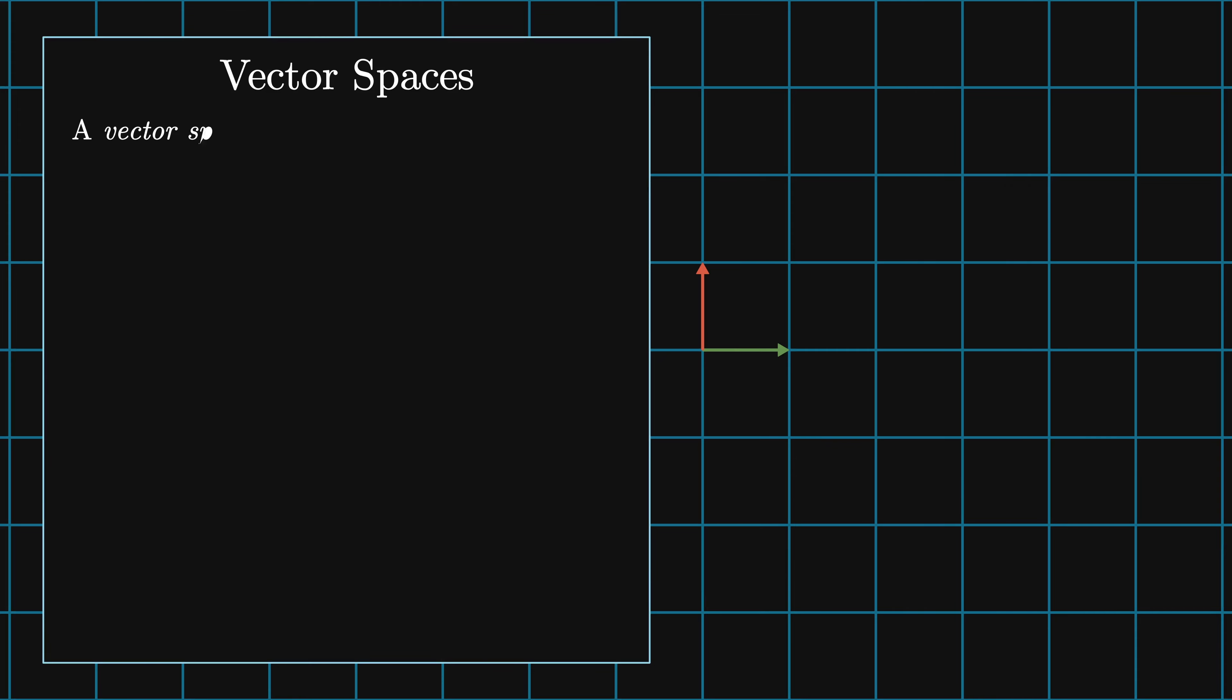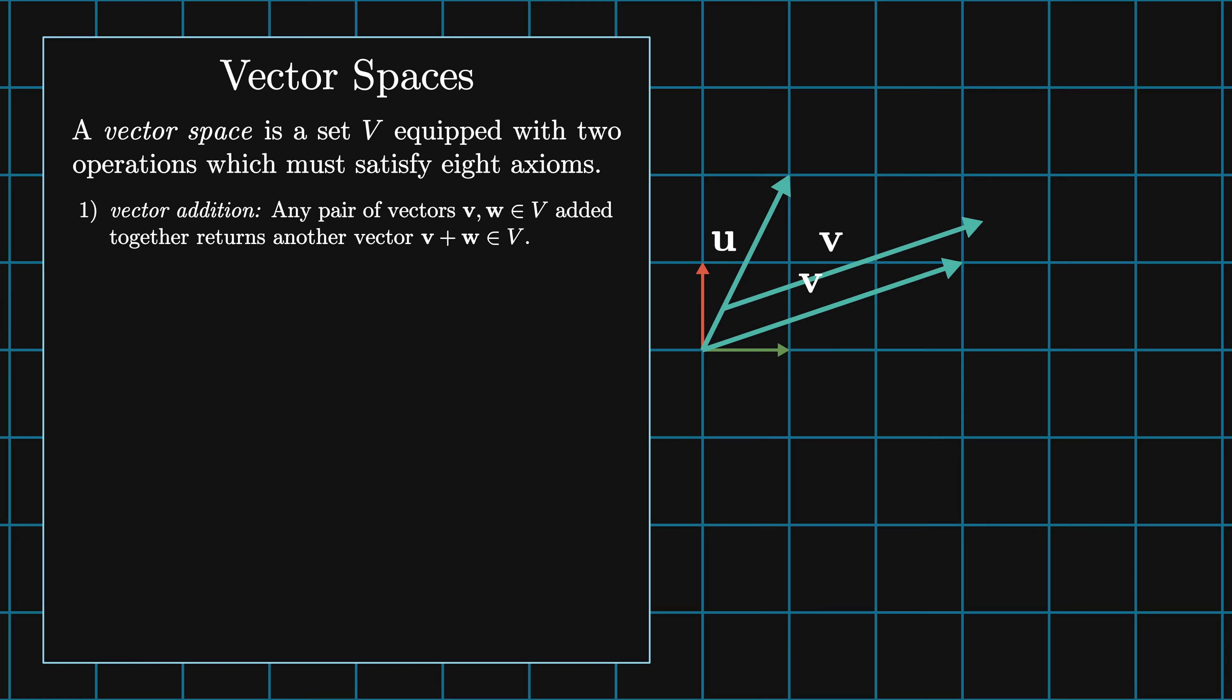First off, we'll start with some definitions. A vector space is a set equipped with two operations which must satisfy eight axioms. The two operations you'll be familiar with: vector addition, where any pair of vectors in the vector space can be added together to produce a third vector that is also in that vector space, and scalar multiplication, where multiplying a vector by a scalar gives a new vector also in the vector space.